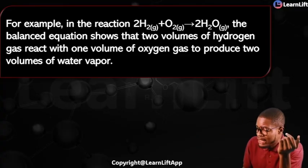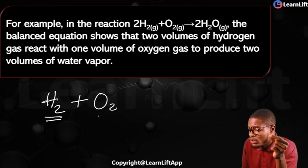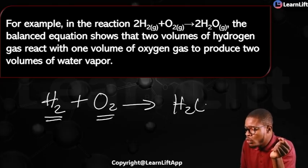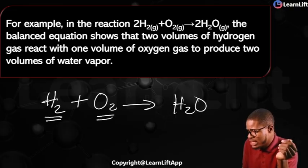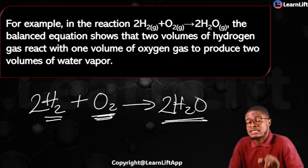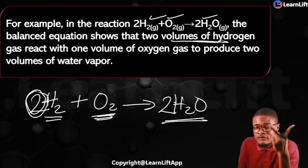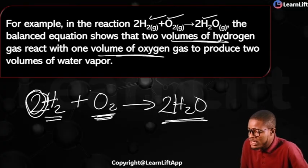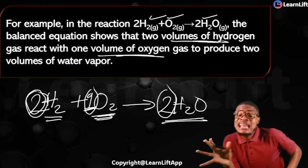For example, the formation of water: hydrogen combines with oxygen to form H₂O. Balancing it — two hydrogens on the left, two on the right; oxygen is one on the left but two needed on the right. Add a 2 in front of H₂O, then balance hydrogen by putting 2 in front of H₂. The balanced equation is 2H₂(g) + O₂(g) → 2H₂O(g), showing you need two volumes of hydrogen to react with one volume of oxygen to produce two volumes of water.